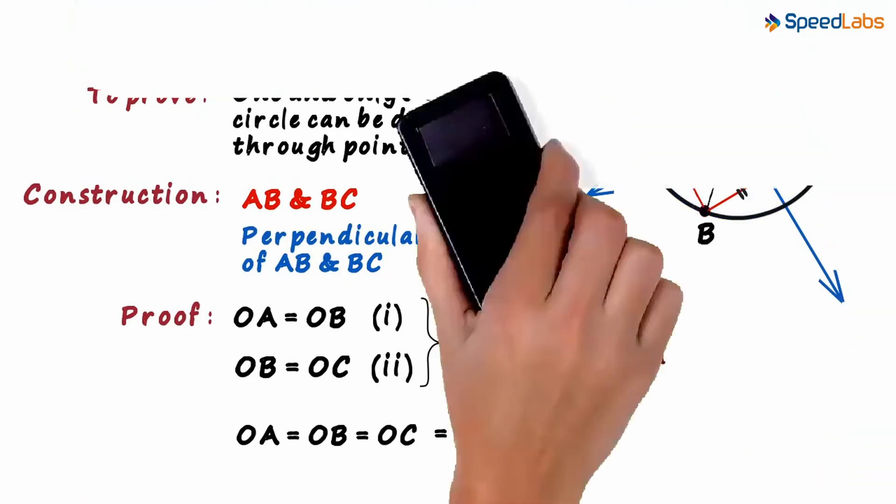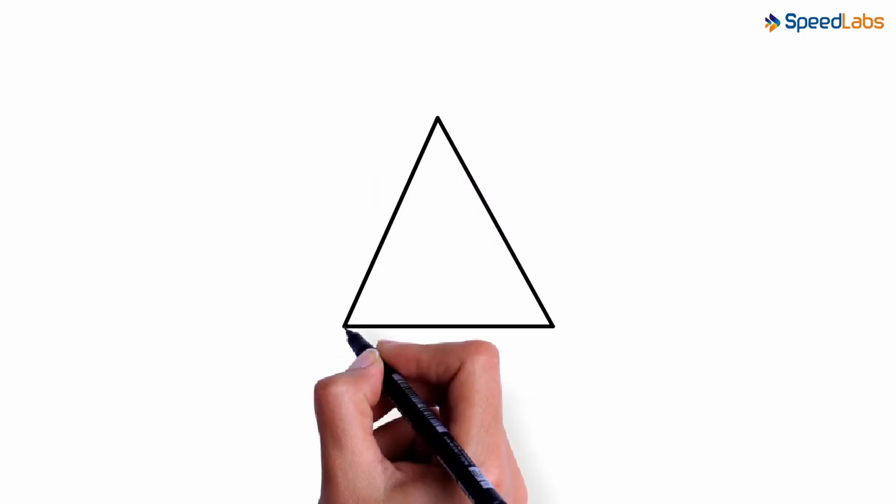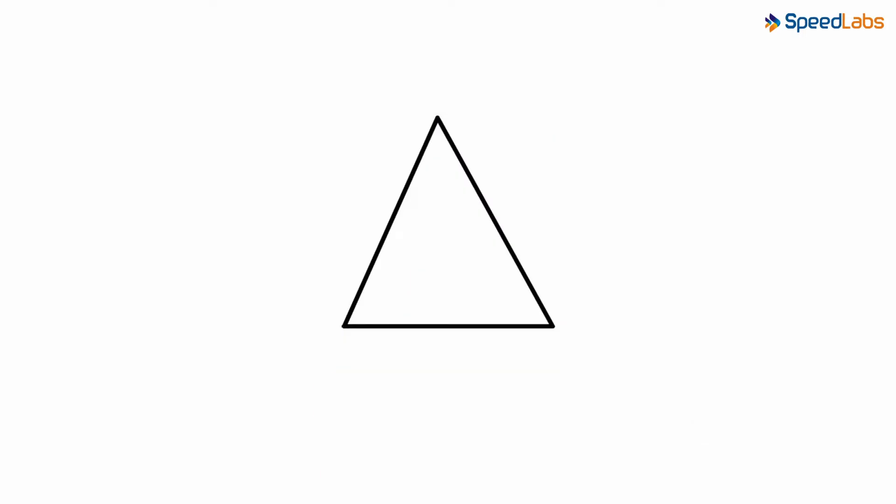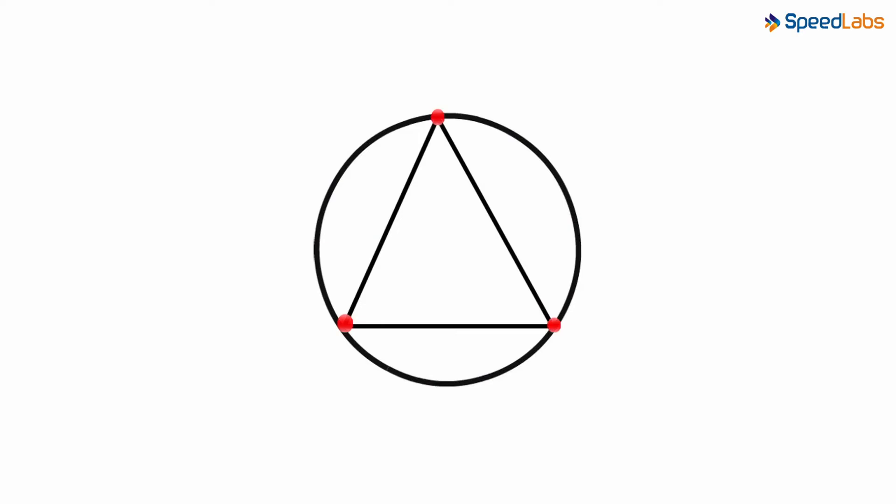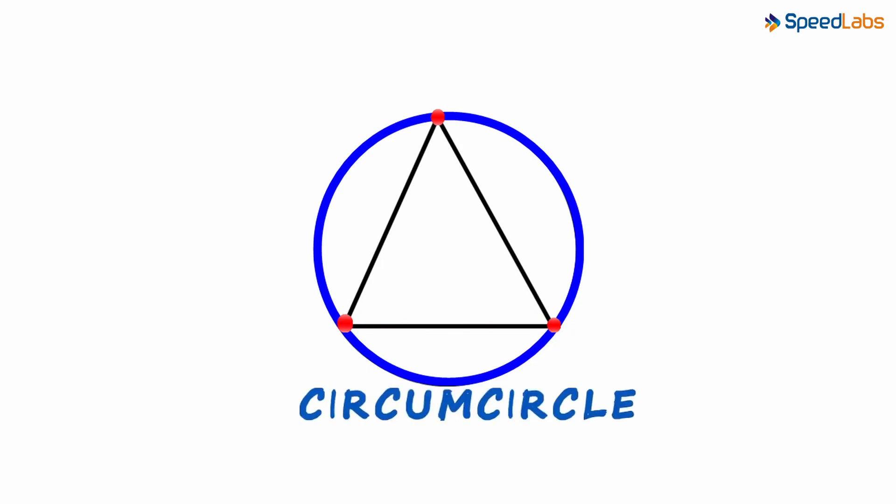There's another tiny little thing we can derive using this theorem. Look at this random triangle. We know that it has three vertices. Using the theorem we just learned, we can say that there will always be just one circle which passes through all its vertices. This circle which passes through all the vertices is called the circum-circle of the triangle.